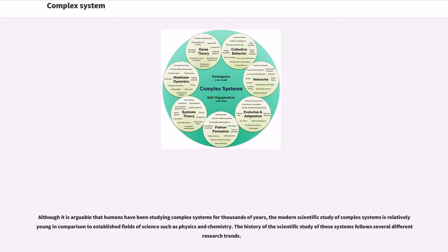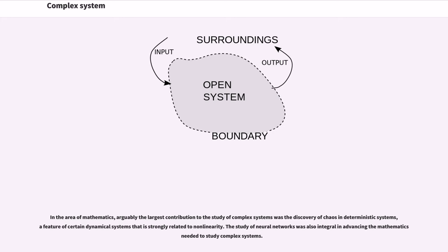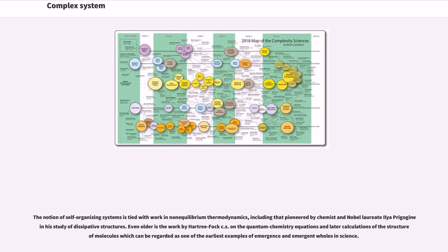The history of the scientific study of these systems follows several different research trends. In the area of mathematics, arguably the largest contribution to the study of complex systems was the discovery of chaos and deterministic systems, a feature of certain dynamical systems that is strongly related to non-linearity. The study of neural networks was also integral in advancing the mathematics needed to study complex systems. The notion of self-organizing systems is tied with work in non-equilibrium thermodynamics, including that pioneered by chemist and Nobel laureate Ilya Prigogine in his study of dissipative structures. Even older is the work by Hartree-Fock on the quantum chemistry equations and later calculations of the structure of molecules which can be regarded as one of the earliest examples of emergence and emergent wholes in science.